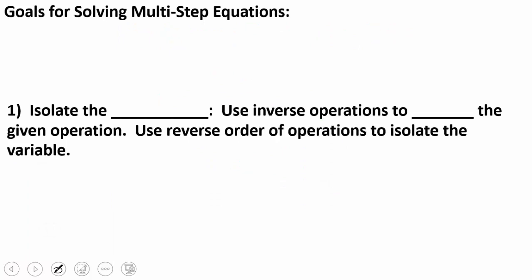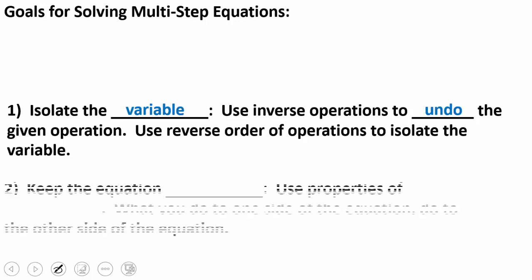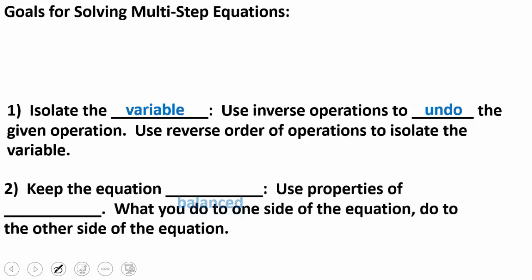Goals for solving multi-step equations are the same as solving for any equations. It doesn't matter what the equation looks like, we always do the same thing. We isolate the variable. We use inverse operations to undo the given operation. Inverse operations in reverse order is how we isolate the variable. Then we keep the equation balanced. We use properties of equality that says, hey, if I do it to one side, I'm going to do the same exact thing to the other side no matter what.